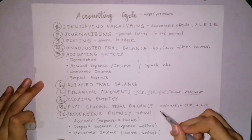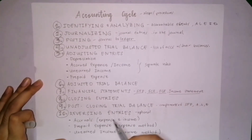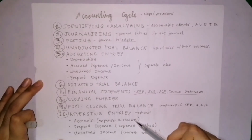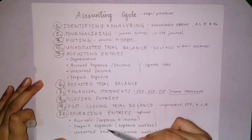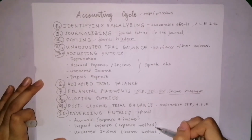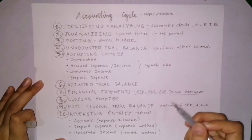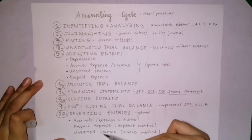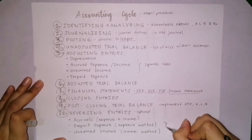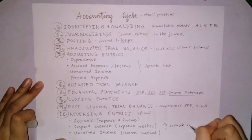There are different types of reversing entries: accruals, which are accrued expense and income; prepaid expense when the expense method is used; and unearned income when the income method is used. The reversing entries will have a separate video since it is interrelated to the adjusting entries.